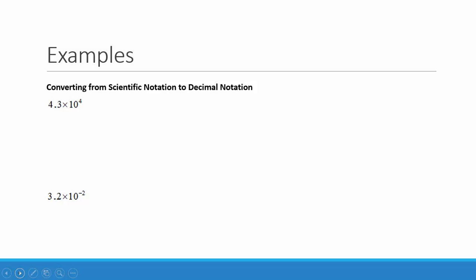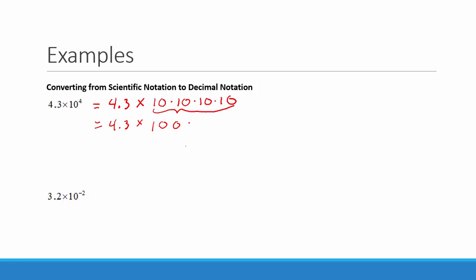Let's start by looking at these numbers written in scientific notation and writing them in decimal notation. We have 4.3 times 10 to the 4th. 10 to the 4th means 10 times 10 times 10 times 10, which is 10,000. When we multiply 4.3 times 10,000 we get 43,000.